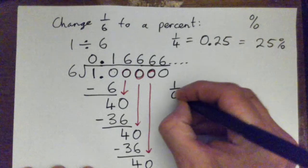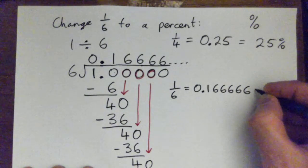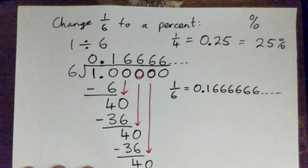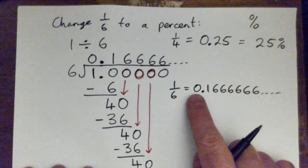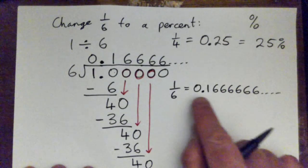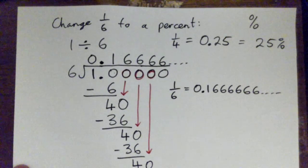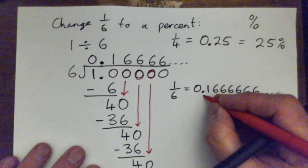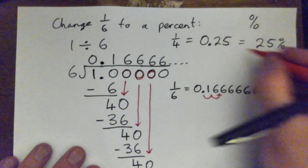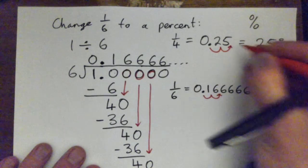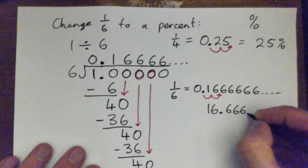So one-sixth equals 0.16666 on and on forever. That's a never-ending decimal. To turn it into a percent, we take this decimal point and move it two spots to the right. Just like with 0.25 — we move the decimal point two spots to the right to make 25%. Here, move it two spots to the right and we get 16.666 on and on forever percent.